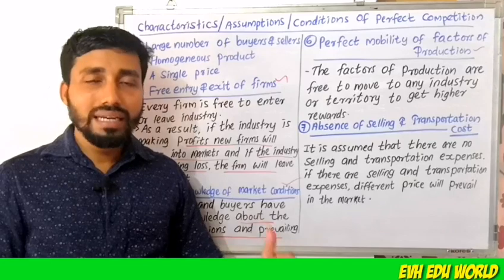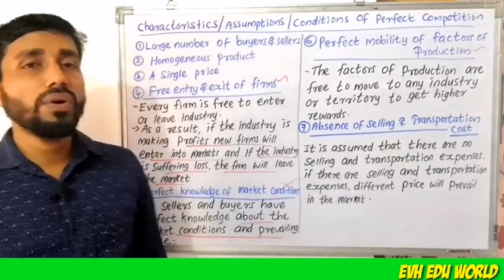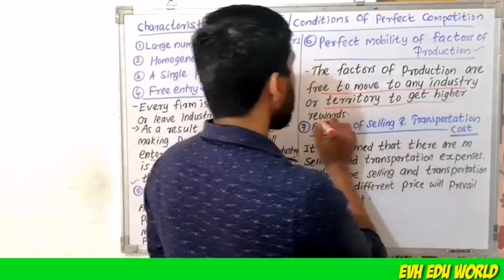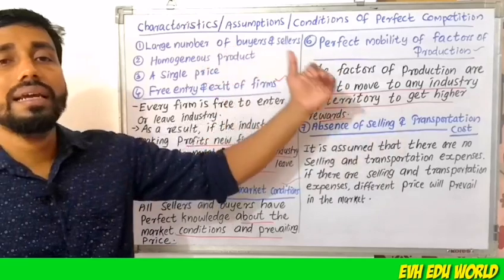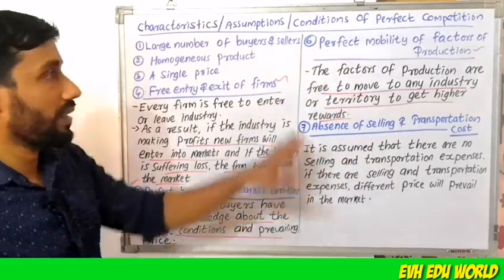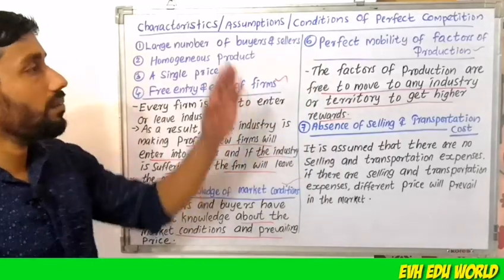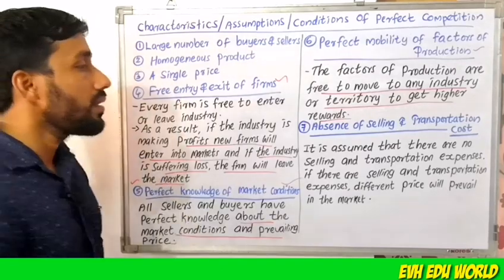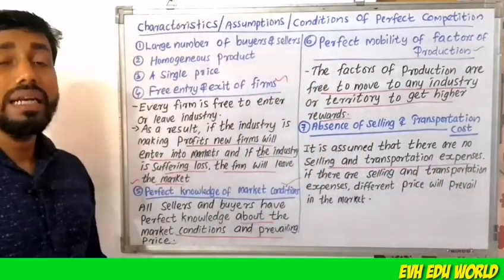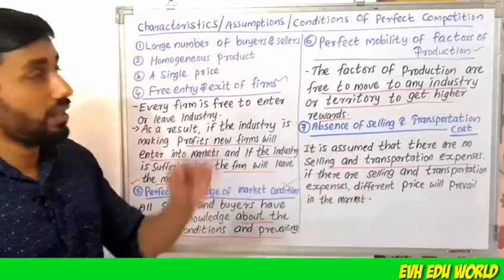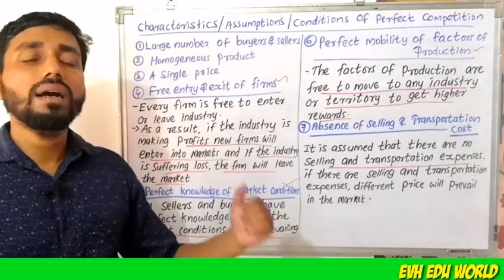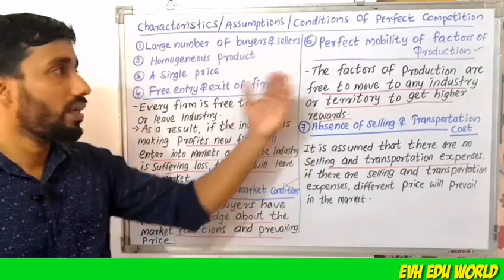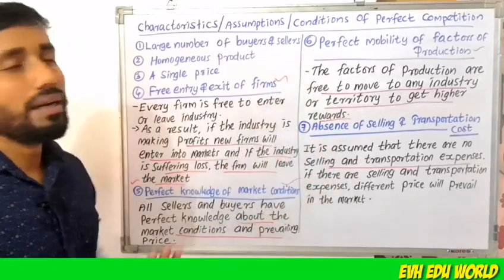The sixth feature is perfect mobility of factors of production. All factors of production are free to move to any industry or territory to get higher rewards. The seventh and last feature is the absence of selling and transportation costs.